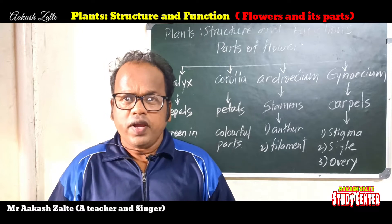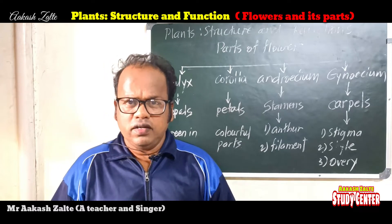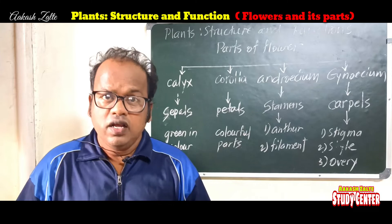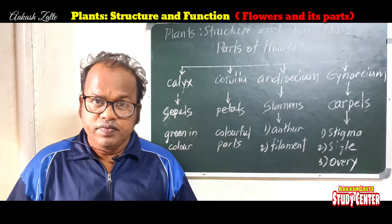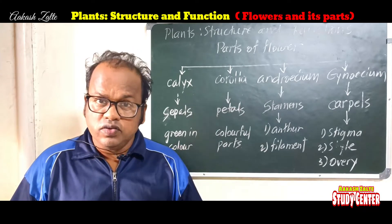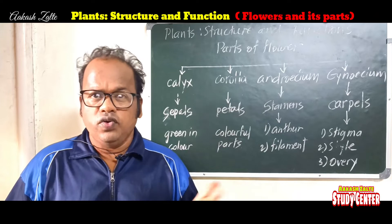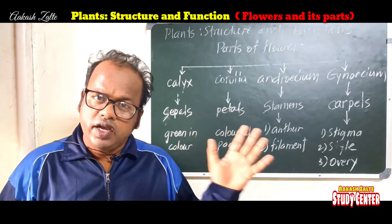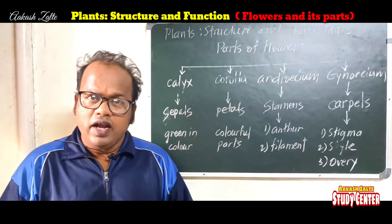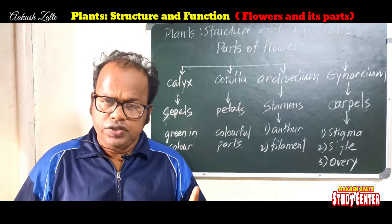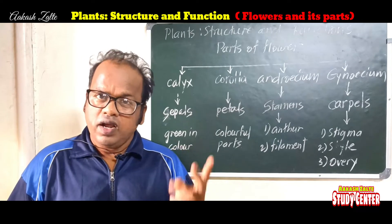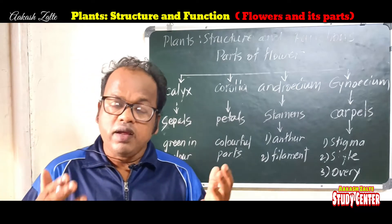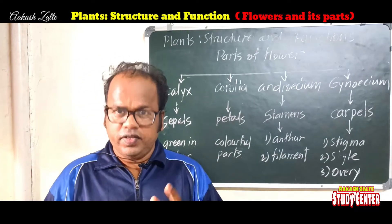The parts of any plant, as I told you earlier, are roots, stem, leaves, flower and fruit — these 5 organs are related to any plant. I have told you about root, stem and leaves. Now let's turn to the 4th part of any plant, that is flower.